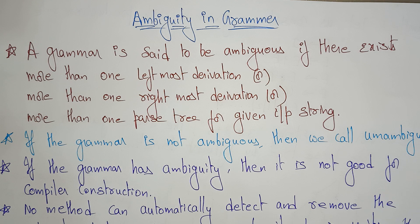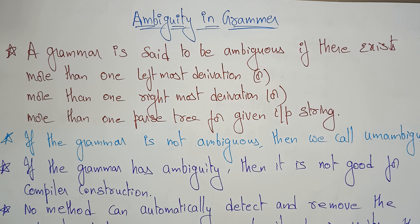Hi students, welcome back. So far we have seen about derivations and the derivation tree — that is, the parse tree. If any string is there, how you are going to derive that string by using the leftmost derivation or rightmost derivation, and after derivation you are going to construct a derivation tree, that is a parse tree. Now let's see what ambiguity in grammar is.